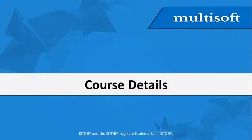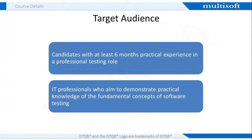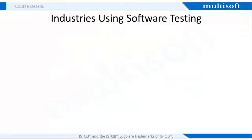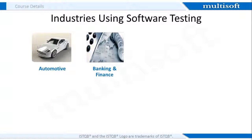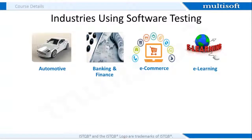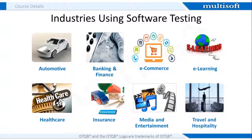Since you now know what ISTQB is, it makes sense to share the course specific details. In terms of target audience, this course is ideal for individuals with at least 6 months practical experience in a professional testing role. Also, it is of benefit to IT professionals who aim to demonstrate practical knowledge of the fundamental concepts of software testing. Let me now provide you an understanding about the scope of software quality testing in the industry. Software testing is performed throughout the engineering industry. Some of the other industries include automotive, banking and financial services, e-commerce, e-learning, healthcare, insurance, media and entertainment, and travel and hospitality.